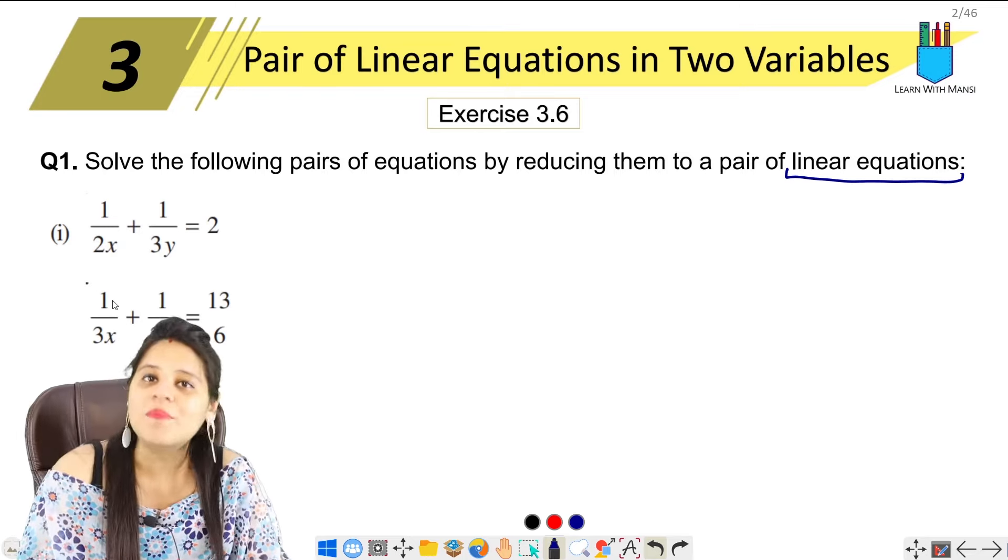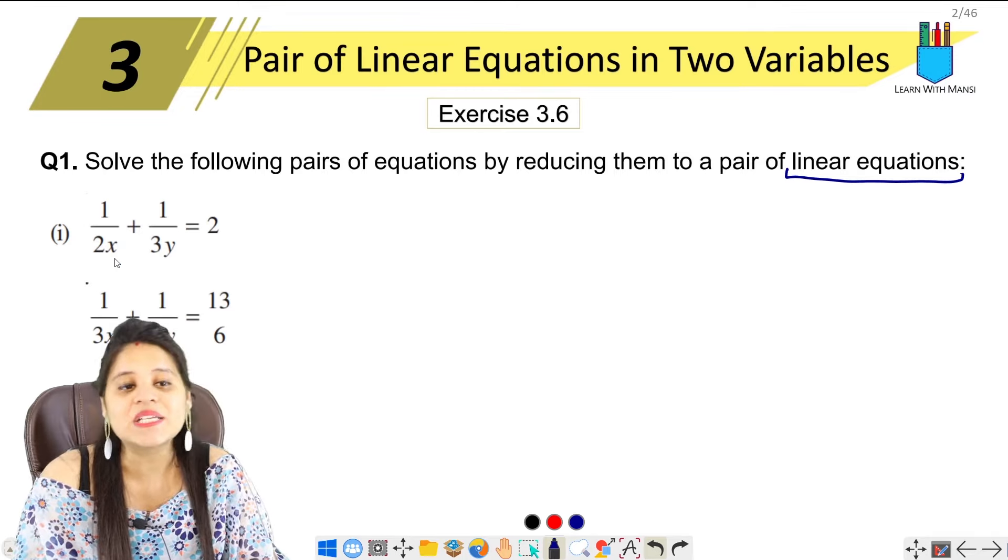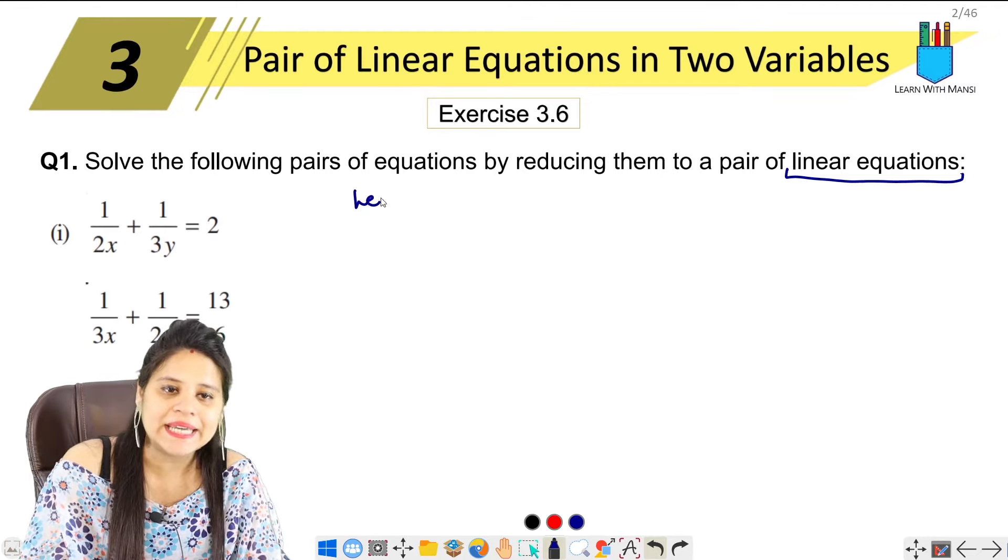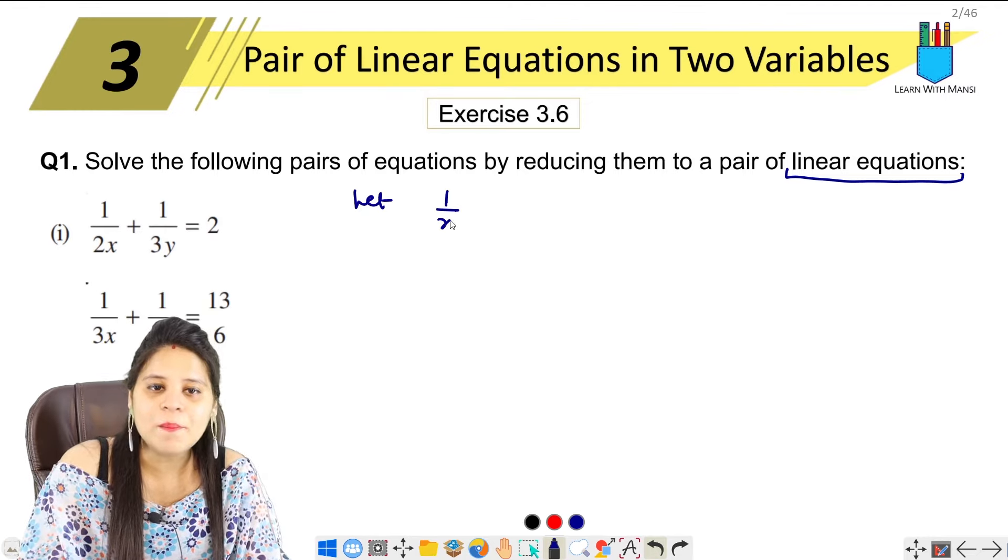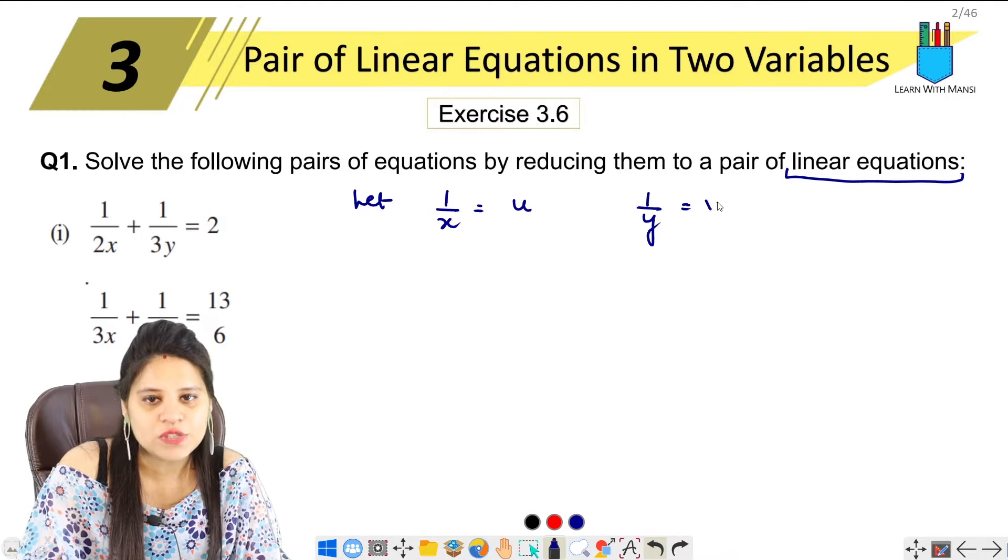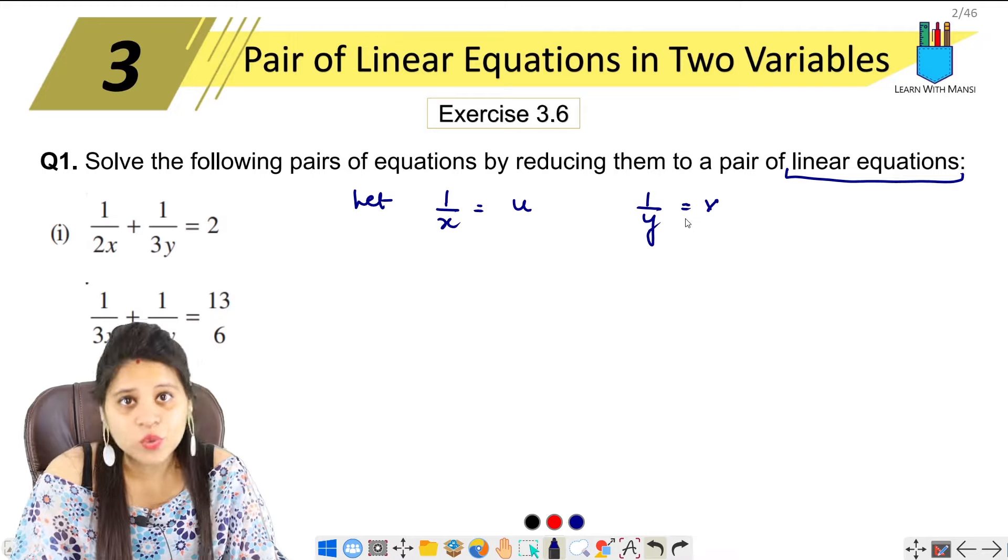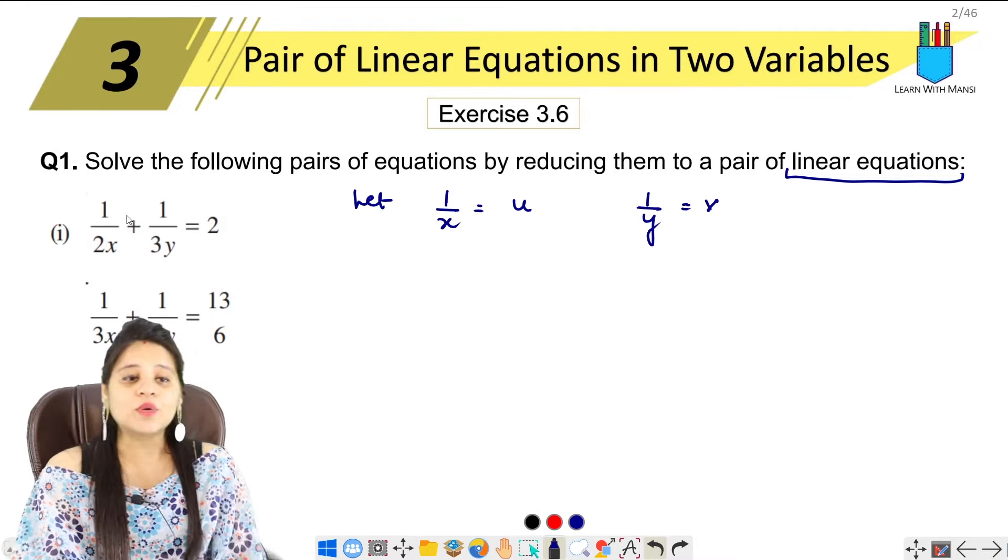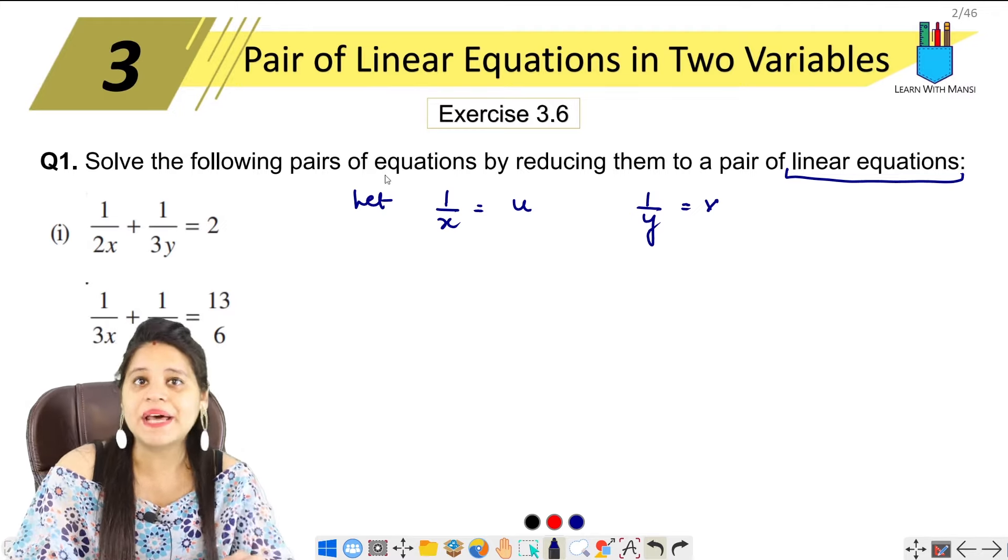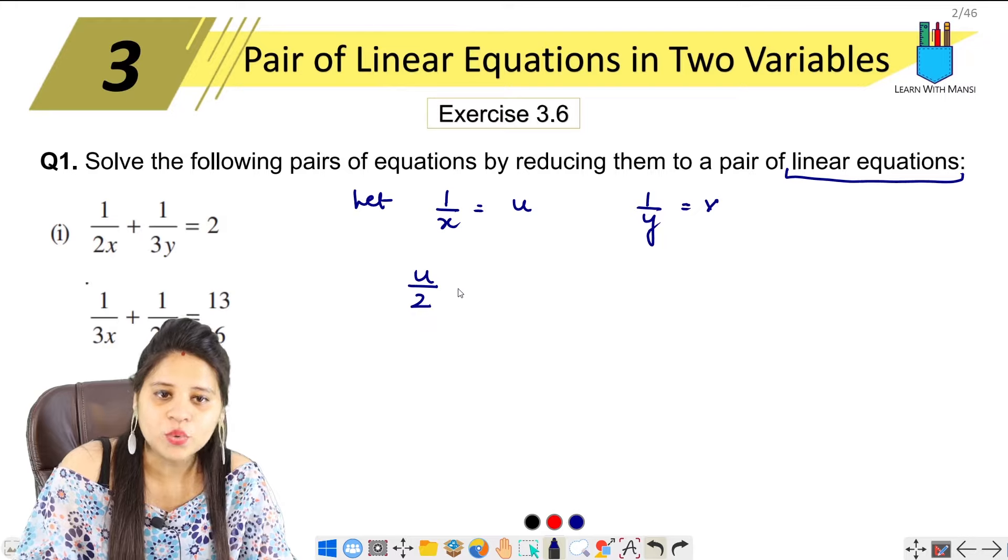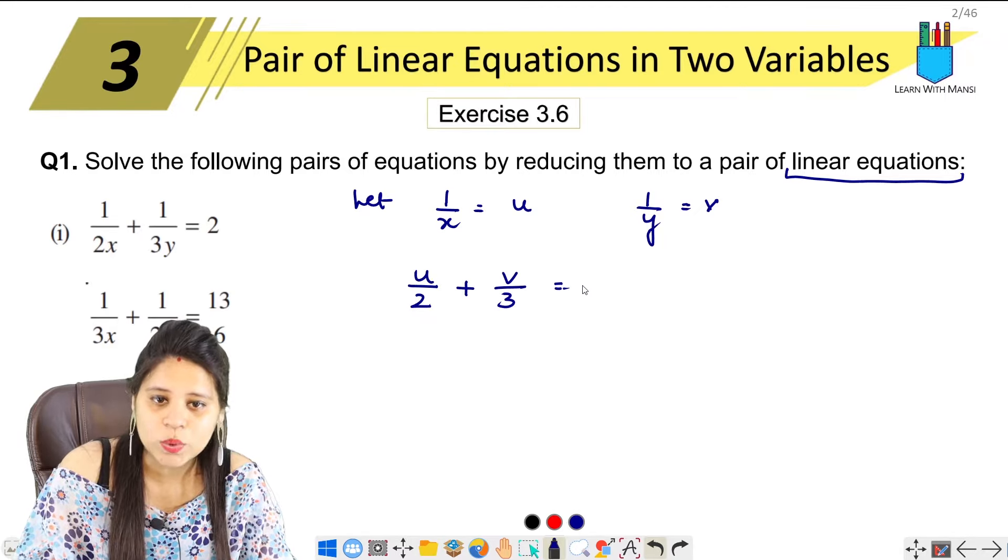Now, in the first part, the common thing that we have shown in the equation is 1 upon x and 1 upon y. So we will start, let 1 upon x equals to u and 1 upon y equals to v. It is not necessarily u, v, or a, b, c, you can take anything.